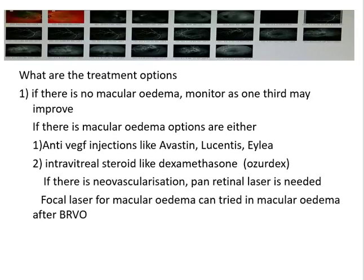For treatment, if a patient develops vein occlusion with no macular edema, they can be monitored every few months for at least two years for complications. If macular edema is present, the first-line option is anti-VEGF injections such as Avastin, Lucentis, or Eylea. The second choice is intravitreal steroids like a dexamethasone implant. If neovascularization or vitreous hemorrhage develops, pan-retinal photocoagulation laser is essential. Focal laser for macular edema can also be tried in some cases.